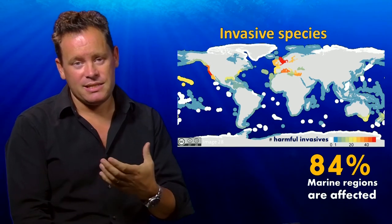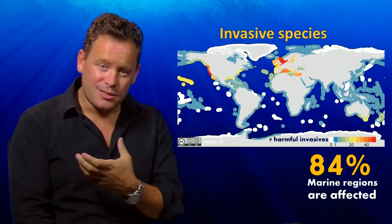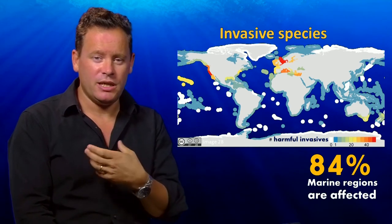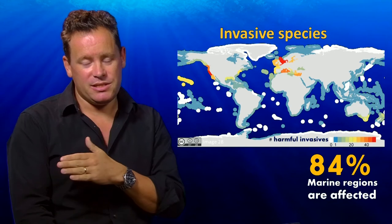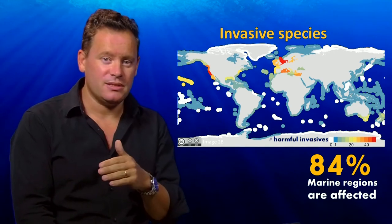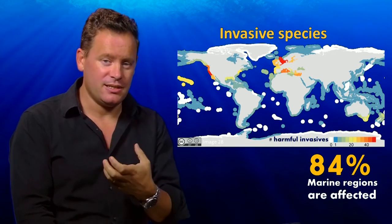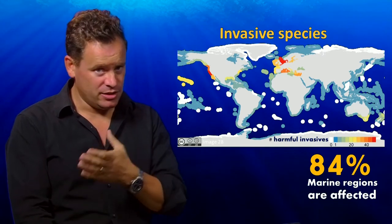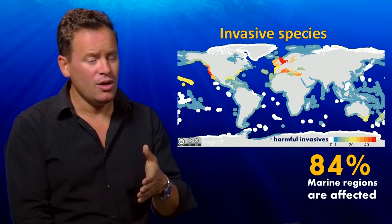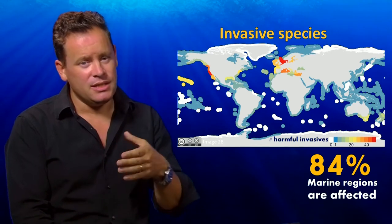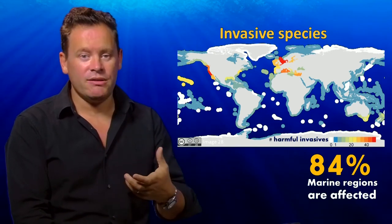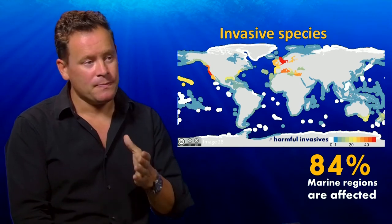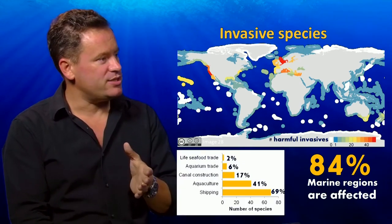Of those invasives, it's easy to get really concerned about alien species, but only about 10% of those alien species that try to make it into an environment will ever actually get established in some small way. It's not just the alien species — often the environment might change, and a naturally occurring species can suddenly reach plague-like proportions. Globally, this is a significant issue.